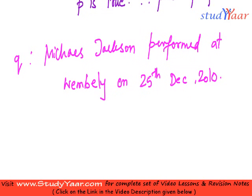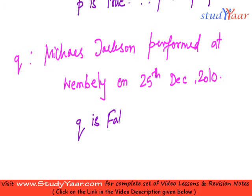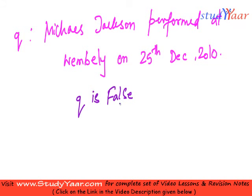I know that Q is false because Michael Jackson was long dead before 25th December 2010. Therefore, in spite of the fact that Q is false, I still call Q a proposition because it still has a truth value. A truth value is anything between true or false. Therefore, Q is also a proposition.